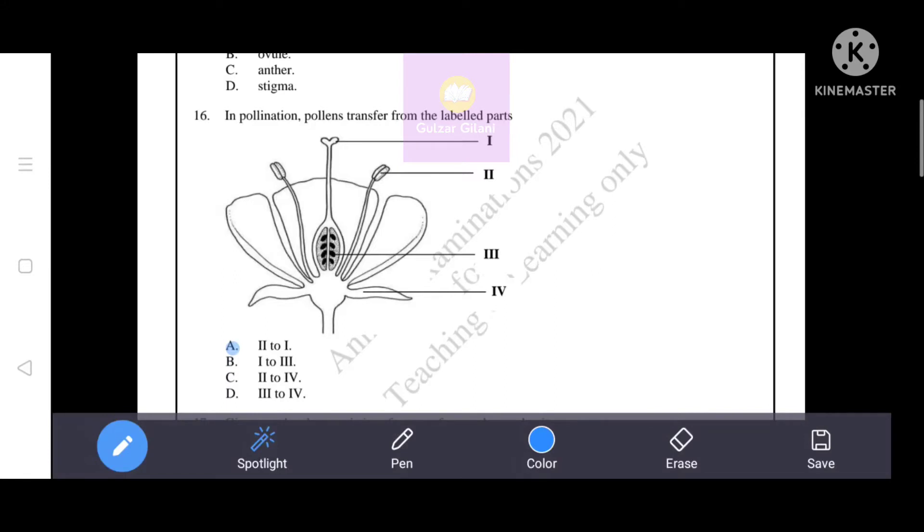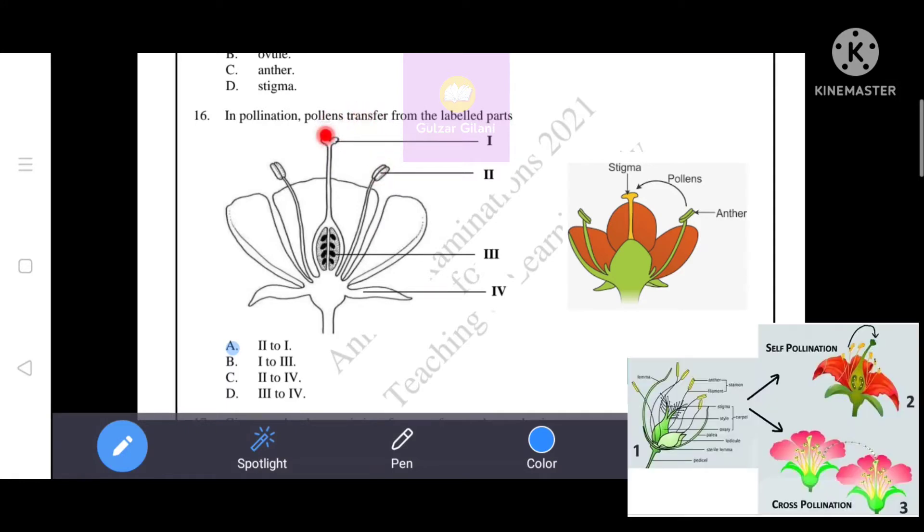Next question. In pollination, pollen is transferred from the labeled parts - when pollen grains mature, they are transferred to stigma from anther. Two shows anther and one shows stigma, means pollen transfers from anther to stigma, that is two to one. That's why the correct answer is option A, that is two to one.